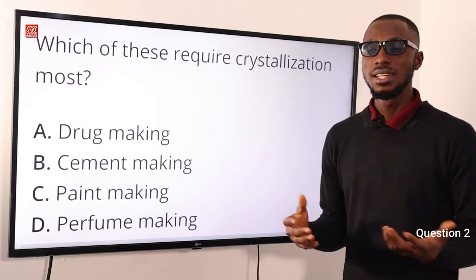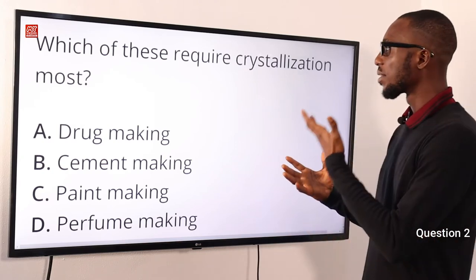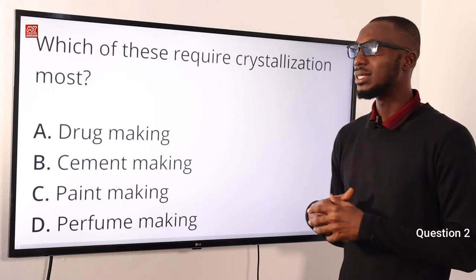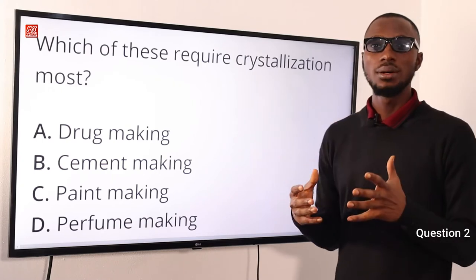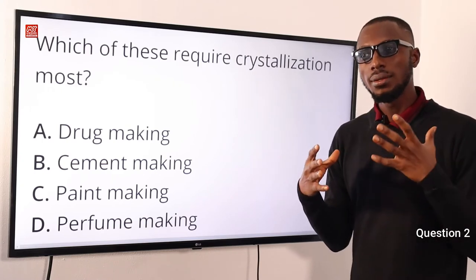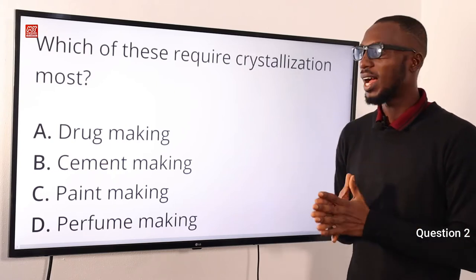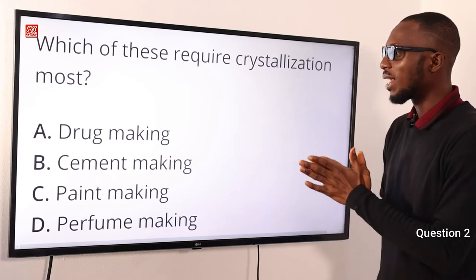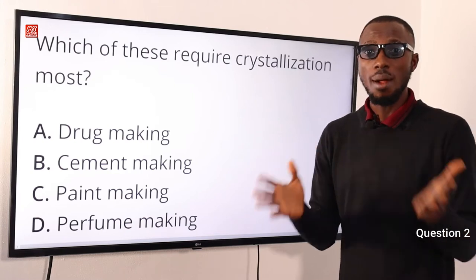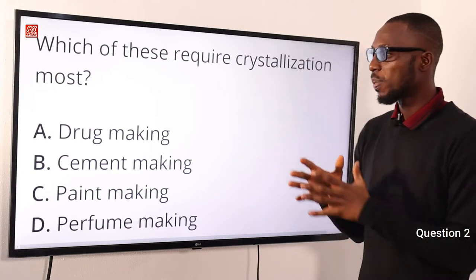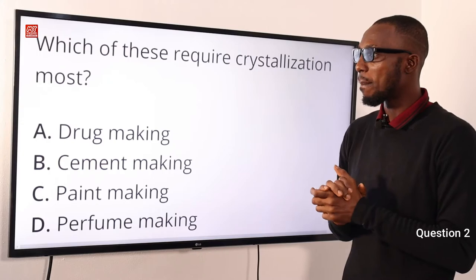Crystallization is used when you need a high standard of purity, and that is employed in drug making and sugar production. The correct option here is option A for drug making.